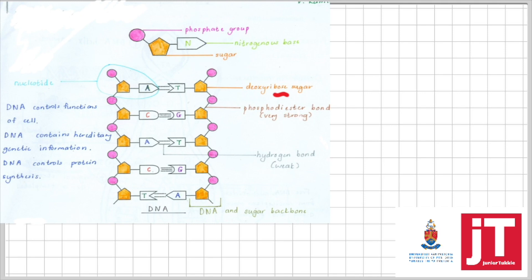On the side here is the DNA phosphate and sugar backbone — make sure you know that. The building blocks of DNA are nucleotides. The functions of DNA are: it controls the functions of the cell, contains hereditary genetic information, and controls protein synthesis.